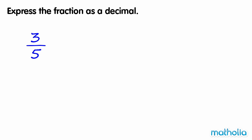Express the fraction as a decimal. To express 3 fifths as a decimal, we need to find an equivalent fraction that has a denominator of 10. We can do this by multiplying the numerator and denominator by 2.